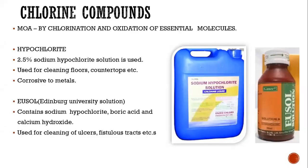Chlorine compounds act by chlorination and oxidation of essential molecules. The first example is hypochlorite solution. 2.5% sodium hypochlorite solution is used for cleaning floors, countertops, washrooms, bathrooms, and basins. It should be used with caution as it is corrosive to metals. Next is EUSOL solution, that is Edinburgh University Solution. It is a combination of sodium hypochlorite, boric acid, and calcium hydroxide. It is used for cleaning of ulcers and fistula tracts.